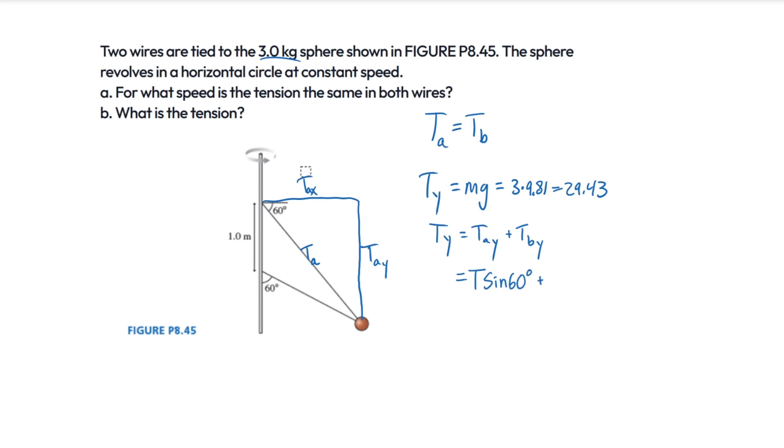And if we do that same thing for B, for B here, well, instead of 60 degrees, we have 30 degrees. Because 60 degrees plus 30 degrees is 90. So we have T sine of 30 degrees. And as we said before, T sub y is equal to mg, which is equal to 29.43.